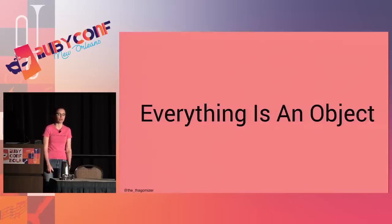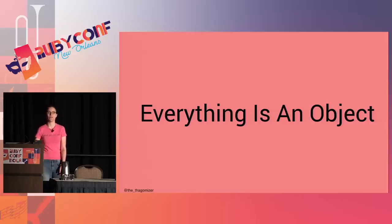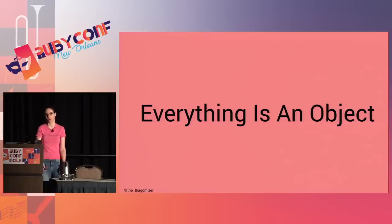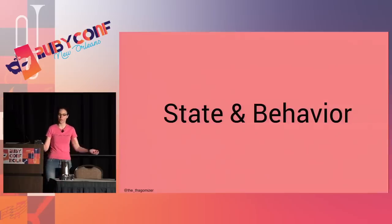Everything in Ruby is an object — everything. False is an object, a singleton instance. Null is an object. Your classes themselves are instances of the object class. Not all OO languages are this pure, but the general idea in OO is that most things — ideally all things — are objects. An object is a way of encapsulating state and behavior.